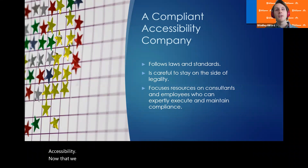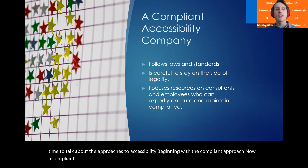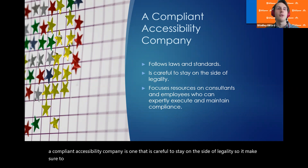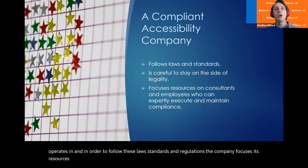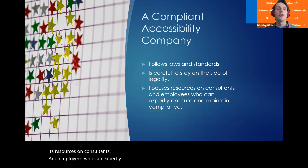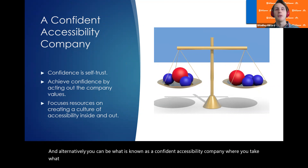Now that we've discussed what accessibility is and the standards for it, let's talk about the two approaches, beginning with the compliant approach. A compliant accessibility company is one that is careful to stay on the side of legality — it makes sure to follow all the laws, standards, and regulations relevant to the industry it operates in. In order to do so, the company focuses its resources on consultants and employees who can expertly maintain and execute the desired level of compliance.